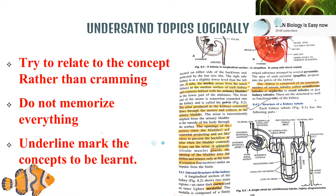The first and foremost thing about learning a topic is to understand it logically. Try to relate the concepts rather than cramming. Do not memorize everything — there are many things in your book and you are not supposed to learn each and every line. For that, you need to underline the concepts to be learned.